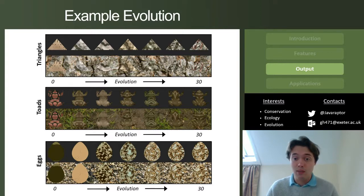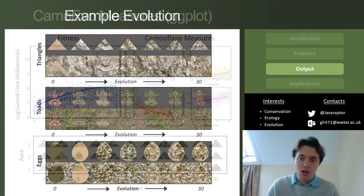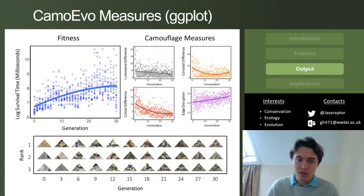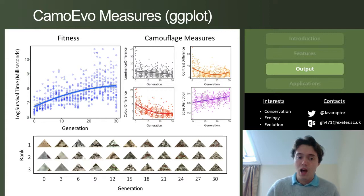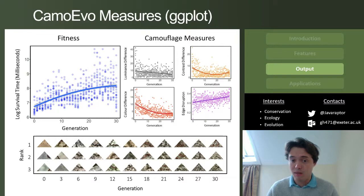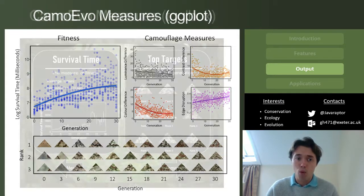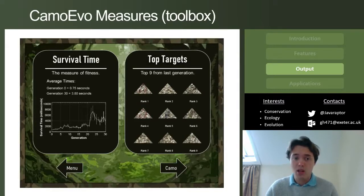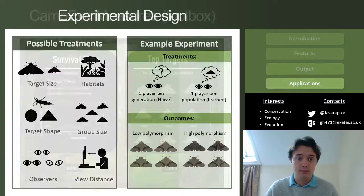Here we have examples of evolution for both pattern generation systems producing effective camouflage in just 30 generations. Here are also examples of the output from CamoEvo — not only do you get the capture time, which is the fitness value, but you also get measures of camouflage. Luminance difference, contrast, and color difference decrease, suggesting targets are becoming more similar to the background, and edge disruptiveness is increasing. CamoEvo can output its own plots, though we recommend extracting the data into R, which the system is able to do for you.